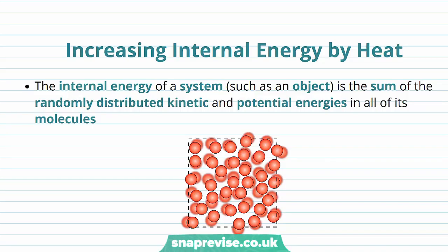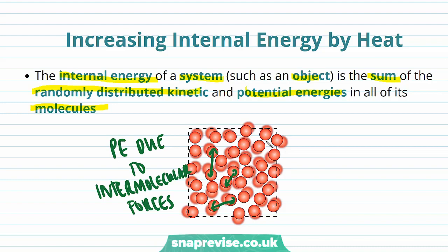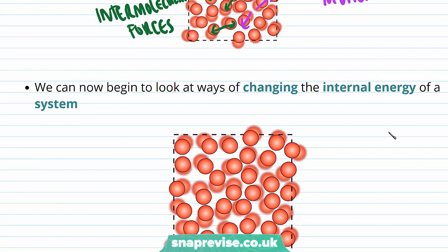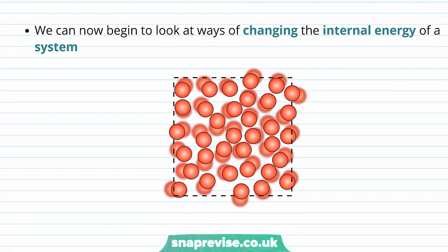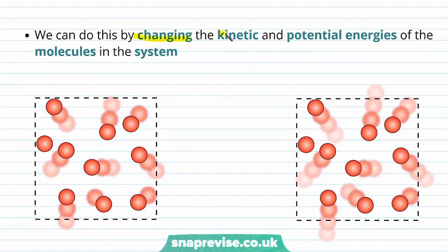We're going to see how we can increase the internal energy of a substance by heat. Remember that we define the internal energy of a system, such as an object, as the sum of the randomly distributed kinetic and potential energies in all its molecules. So a liquid, for example, is going to have potential energy due to intermolecular forces and kinetic energy due to the motion of the molecules. We can begin to look at ways of changing the internal energy of a system, recalling that internal energy equals kinetic energy plus potential energy.